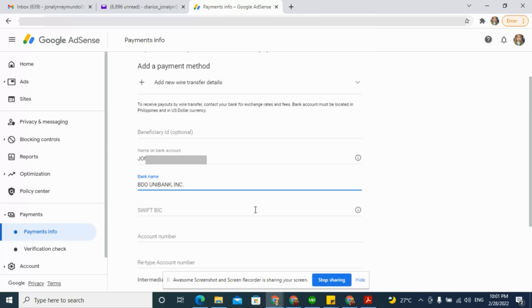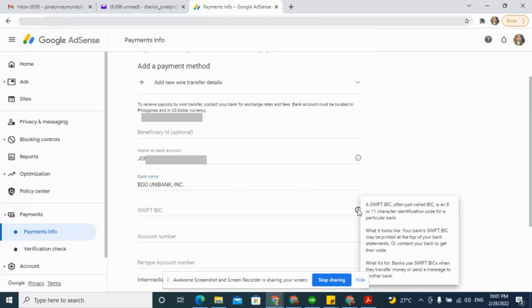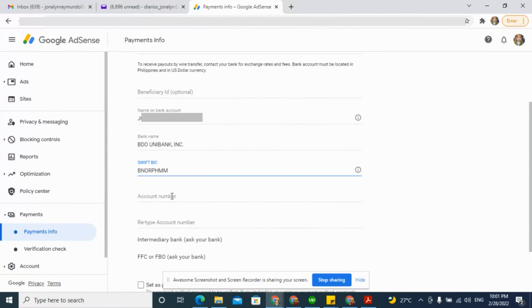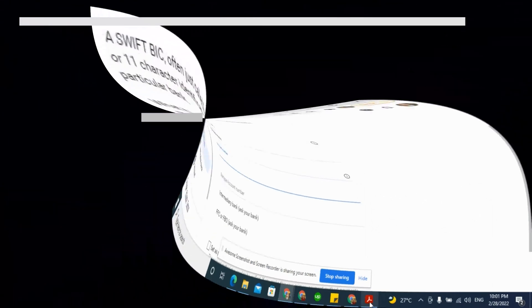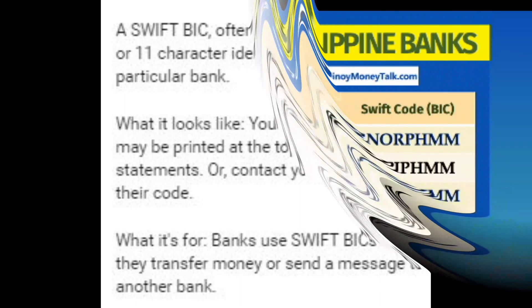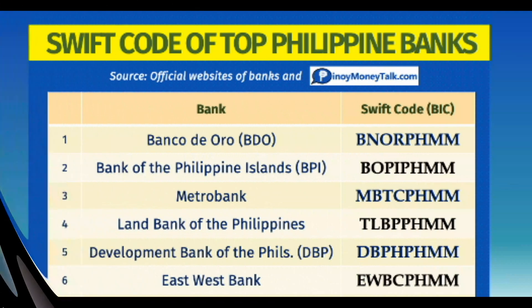On SWIFT BIC, enter your bank SWIFT code. A SWIFT BIC, often just called BIC, is an 8 or 11 character identification code for a particular bank. Your bank's SWIFT BIC may be printed at the top of your bank statements, or contact your bank to get their code.